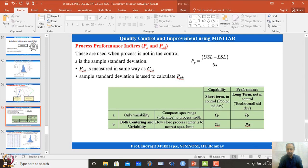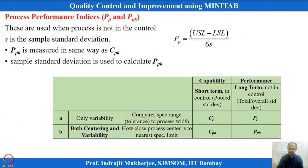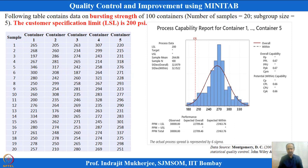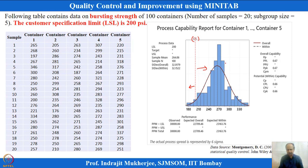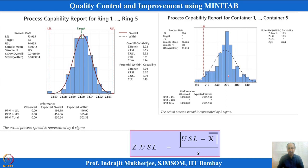This is a one-sided specification — anything below the lower specification is a rejection. The minimum required strength is 200 psi. The normality assumption appears more or less satisfactory here, but we can always check normality assumptions.